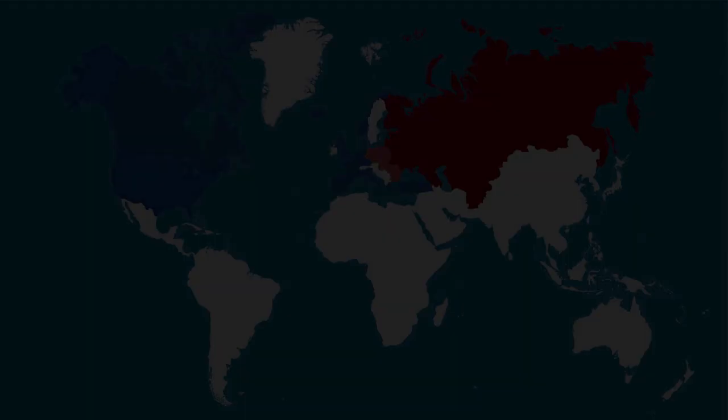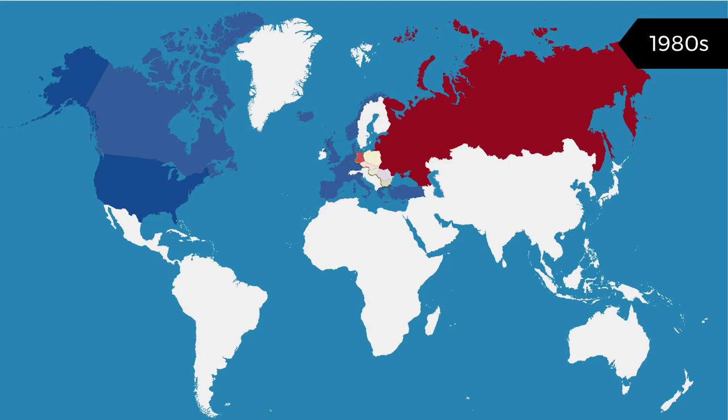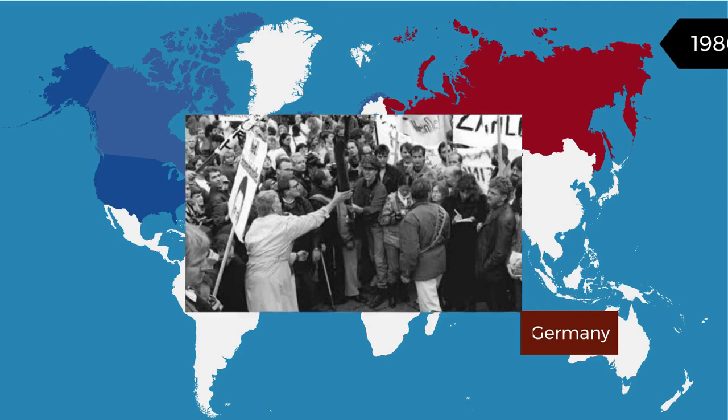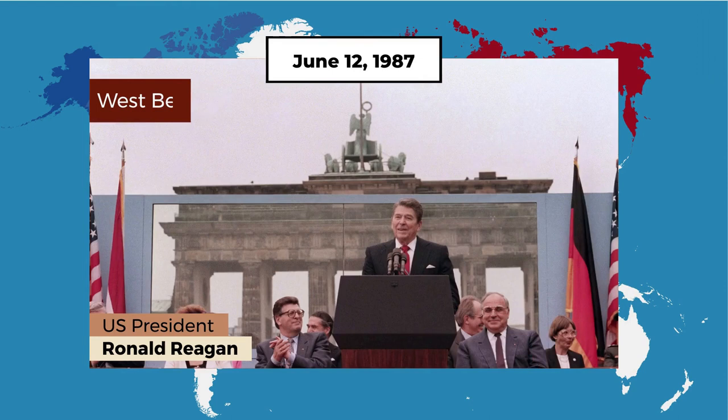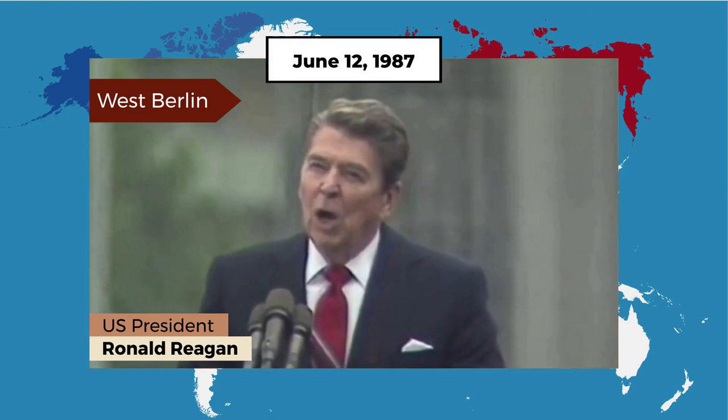By the end of the 1980s, the liberation of the other Eastern Bloc countries triggered mass demonstrations for free travel and demands for democracy in East Germany. On June 12, 1987, U.S. President Ronald Reagan arrived in West Berlin for the 750th anniversary of Berlin. In his famous speech in front of the Brandenburg Gate, he challenged his Soviet counterpart, Mikhail Gorbachev, to tear down the wall.